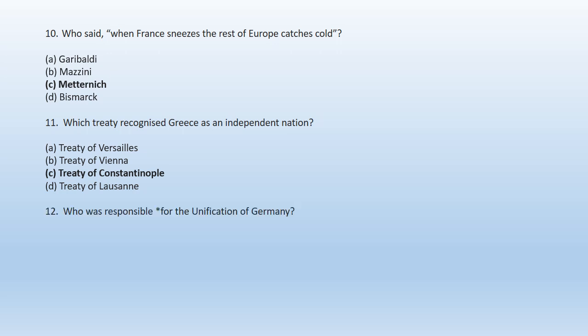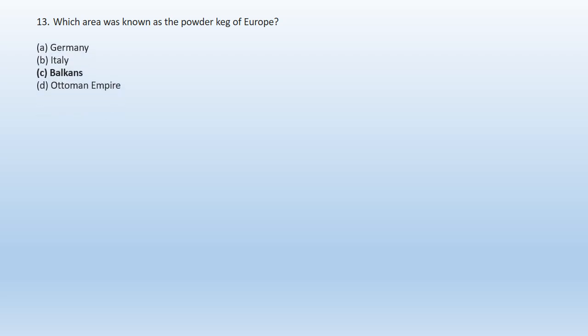Question 12: Who was responsible for the unification of Germany? The right option is option A — Bismarck was responsible for the unification of Germany. Question 13: Which area was known as the powder keg of Europe? A. Germany, B. Italy, C. Balkans, D. Ottoman Empire. Option C — Balkans is the right answer. The Balkans area was known as the powder keg of Europe.